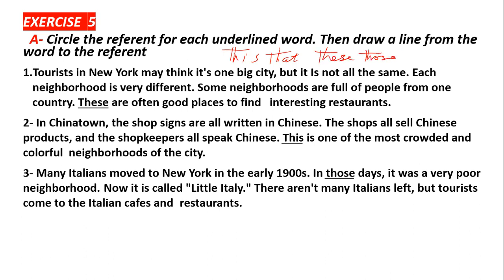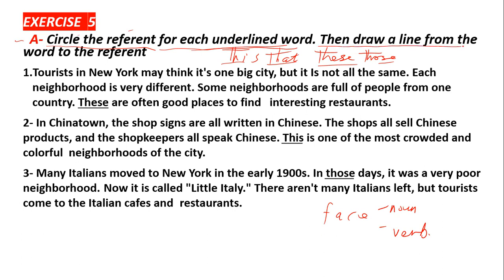We always face — دائما نواجه — these demonstrative pronouns, whether as a noun or as a verb, كفعل. We usually face these demonstrative pronouns in reading passages, في قراءة الفقرات أو القطع. Number A: Circle the reference — ضع دائرة على المرجع — for each underlined word, لكل كلمة تحتى خط. Then draw a line from the word to the reference, بعد كده ضع خط من الكلمة إلى مرجعها.